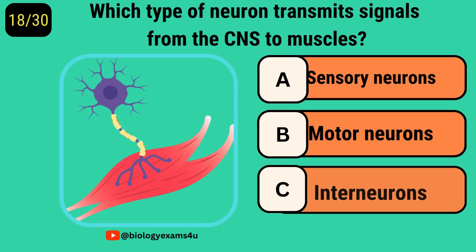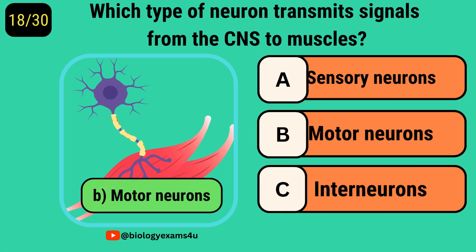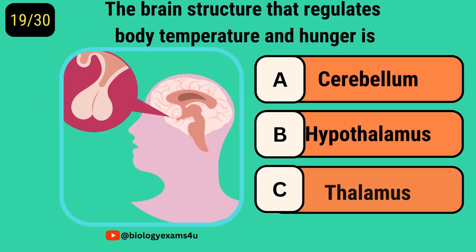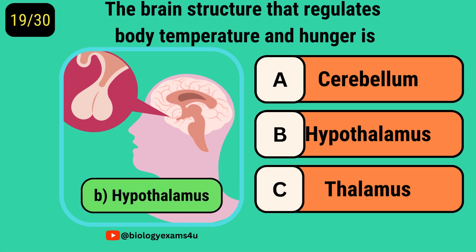Which type of neuron transmits signals from the CNS to muscles? Motor neurons. The brain structure that regulates body temperature and hunger is? Hypothalamus.